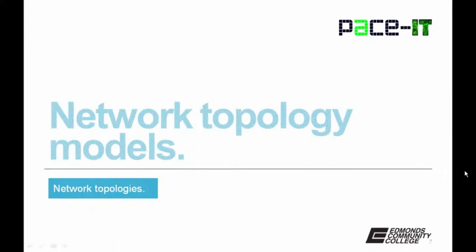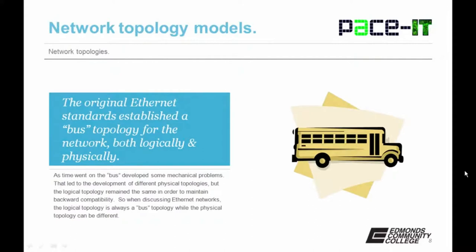Now let's move on to some common network topology models. The first one is the bus. The original Ethernet standard established a bus topology both logically and physically. A bus topology means the signal traveled along a predetermined path from end to end. As time went on, the bus developed some mechanical problems, leading to the development of different physical topologies. But the logical topology remained the same to maintain backward compatibility. So in Ethernet networks, the logical topology is always a bus topology, while the physical topology can be different.